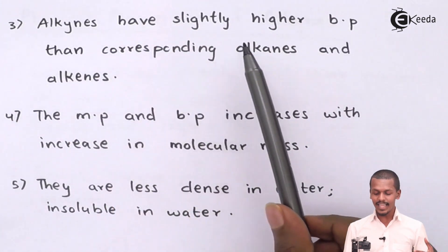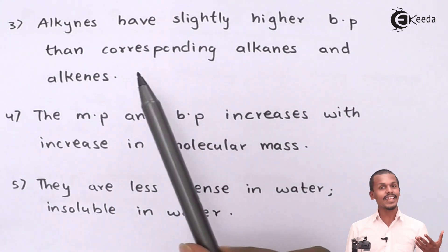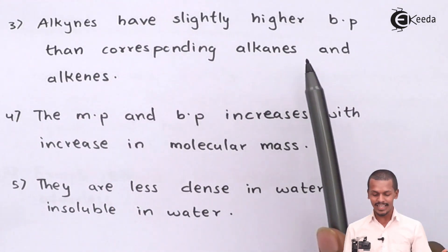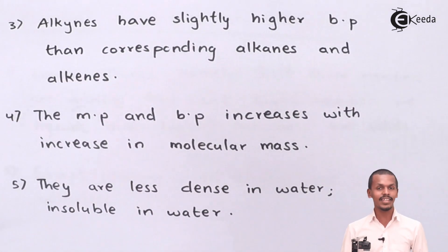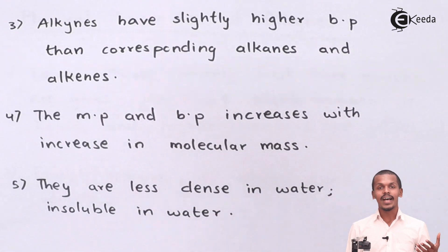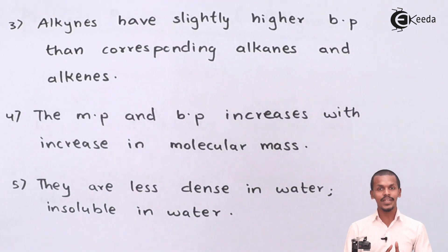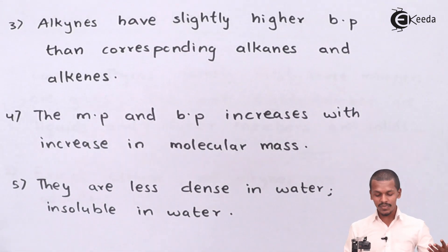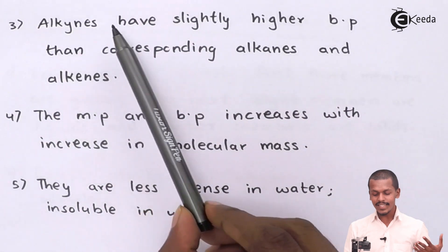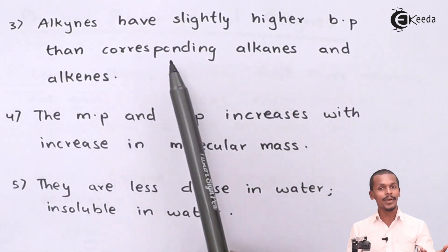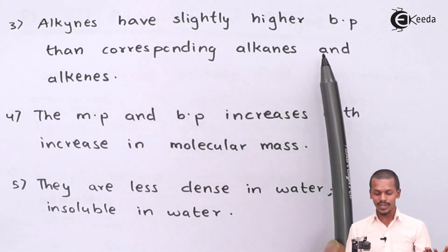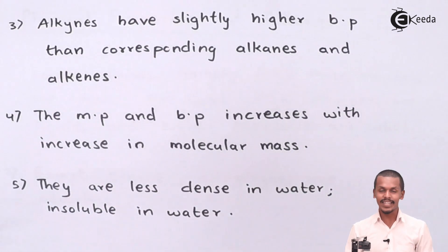Alkynes have slightly higher boiling points than the corresponding alkanes and alkenes. The reason behind that is because alkynes form a very strong bond between the carbon atoms.